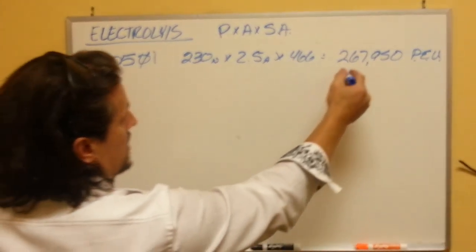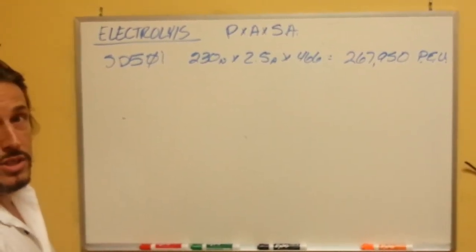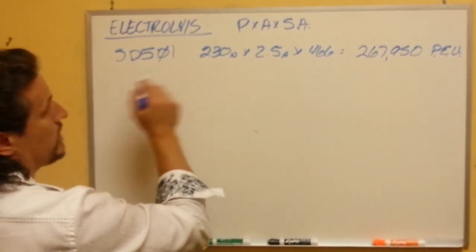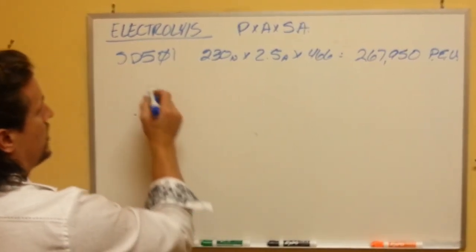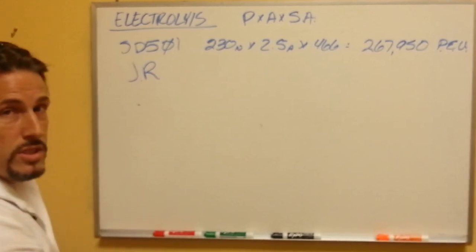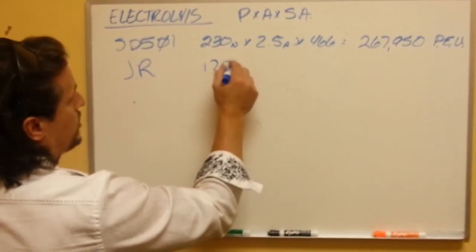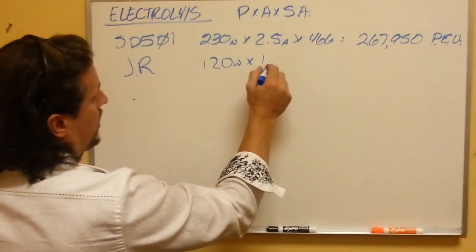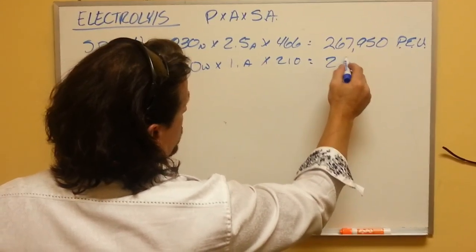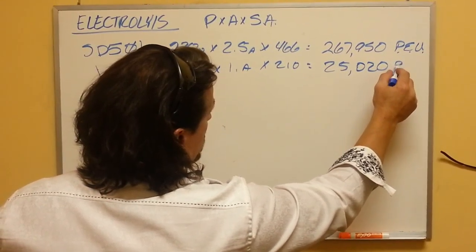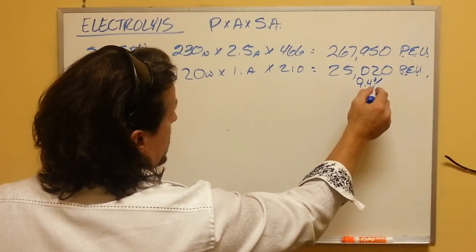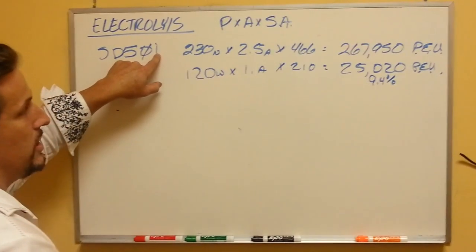What that means is that's the ability to generate an electrical discharge to disassociate water. That's a big fancy term, but if you look at the second unit in my idea of comparison, on the market, the junior is the second best machine. Here's why. It has 120 watts, 1 amp, and 210 square inches of surface area. That gives you a number of 25,020 approximately, which is actually only 9.4% power compared to the SD501.